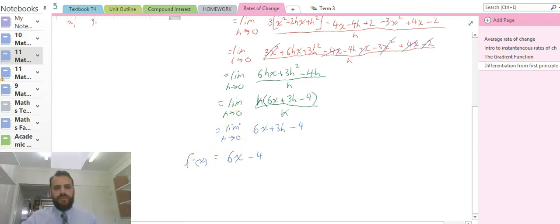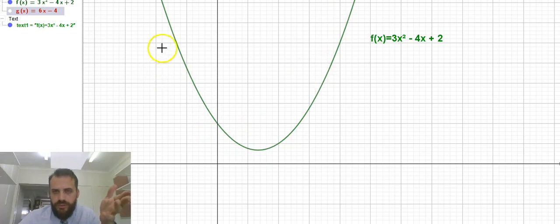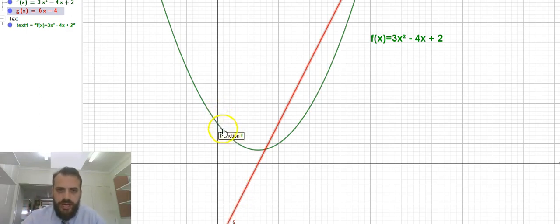Alright, so what does all this mean for us? It means that with our initial function f(x) = 3x² - 4x + 2, the derivative function or the gradient function of that function can be found using differentiation from first principles and it is 6x - 4. I'm going to briefly show you that. This was our original function, 3x² - 4x + 2. What's our gradient function? 6x - 4.